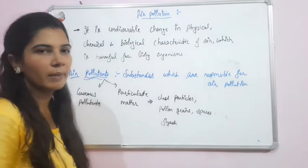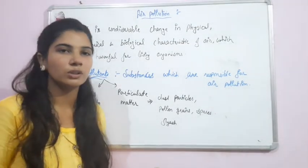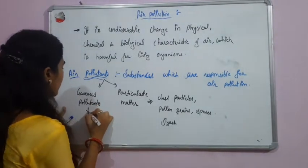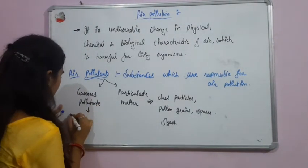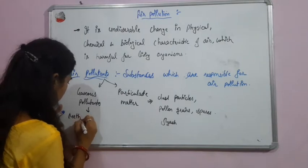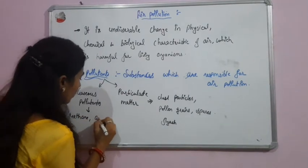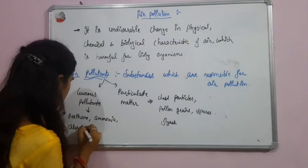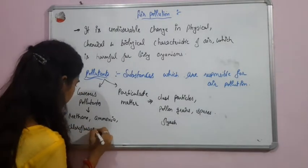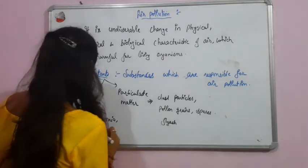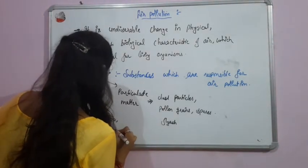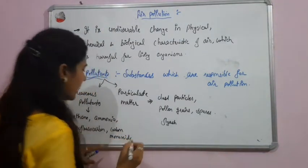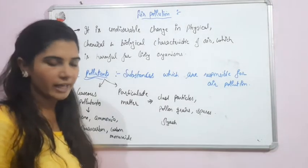If we talk about gaseous pollutants, there are some gases that are responsible for air pollution. Examples of gaseous pollutants include methane, ammonia gas, chlorofluorocarbon, and carbon monoxide — these are harmful gases which are responsible for air pollution.